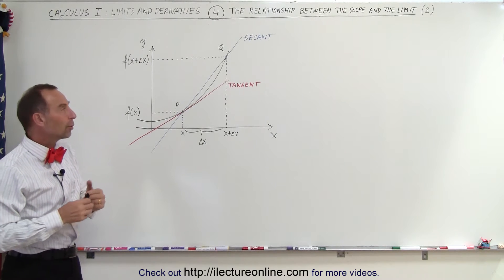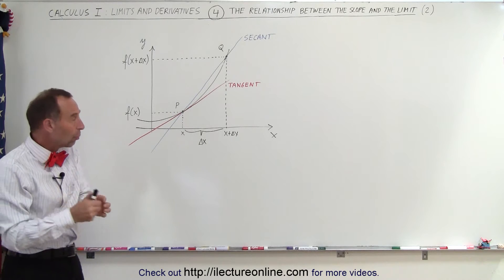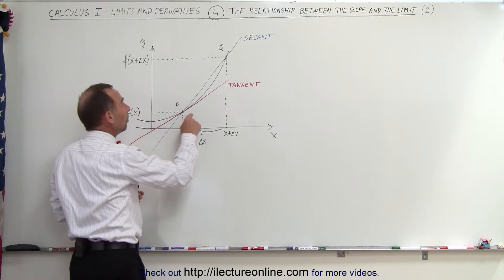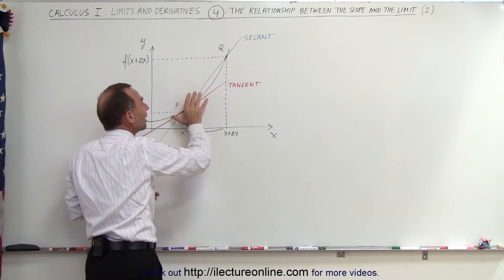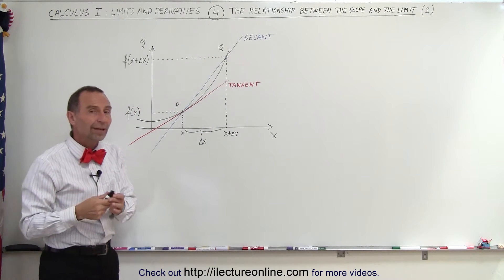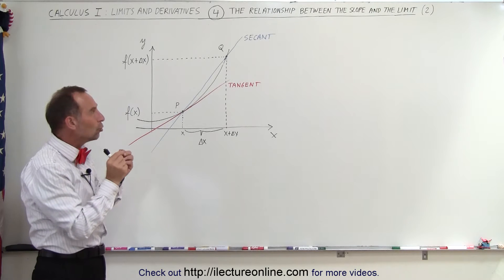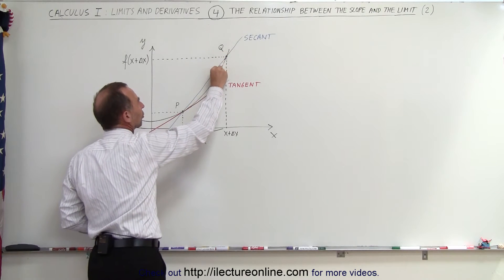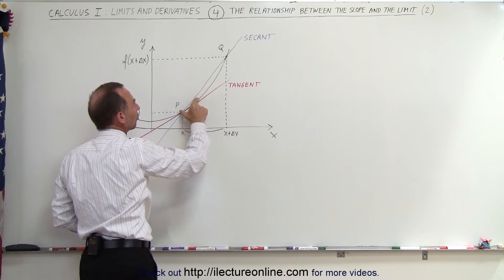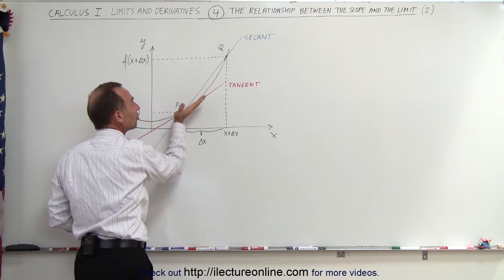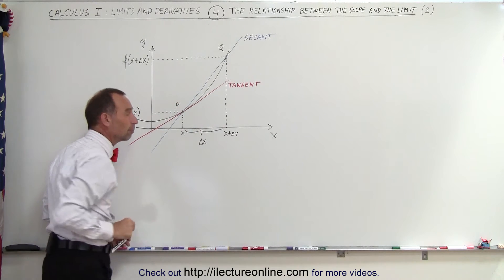So if we want to calculate the slope at point P, we can calculate the slope of the secant line and say that it's close to the slope at point P. And if we want the two to match even more closely, we can move point Q closer and closer to point P, such that the slope of the secant line will much more closely resemble the slope of the tangent and therefore the slope of the function at point P.